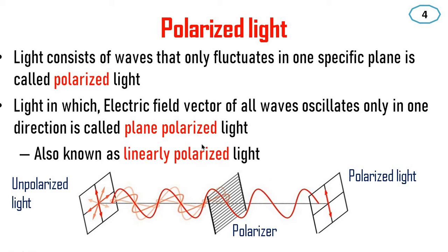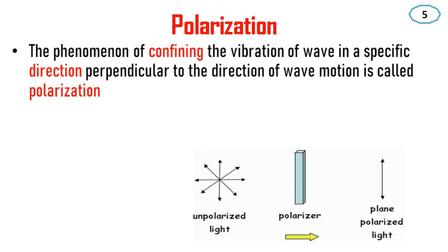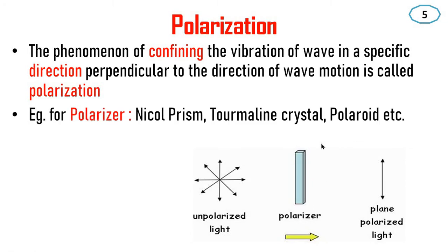Plane polarized light is also known as linearly polarized light. This is the unpolarized light, and this is the plane polarized light — it passes through a polarizer. The phenomenon of confining the vibration of a wave in a specific direction perpendicular to the direction of wave motion is called polarization. This device is called a polarizer.